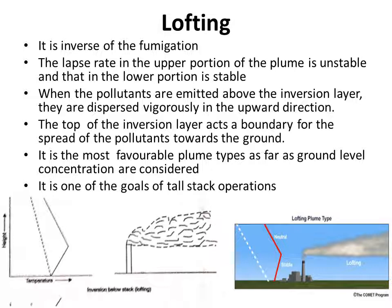As seen in the figure, above the plume line there is an unstable layer and below the plume line it is stable. There is thorough mixing of pollutants into the atmosphere in the upper layers above the plume line, whereas the pollutant does not mix with the atmosphere below the plume line. As a result, there is very little pollution at the ground level and the pollutants are dispersed and diluted completely in the upper atmosphere.